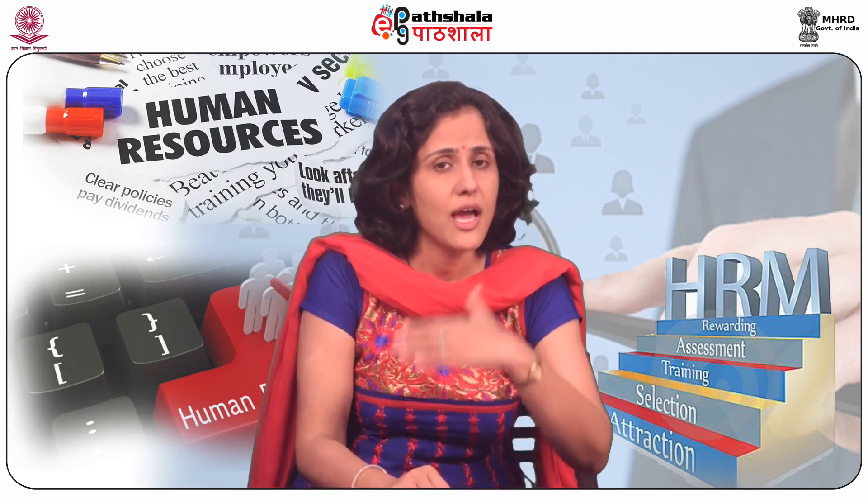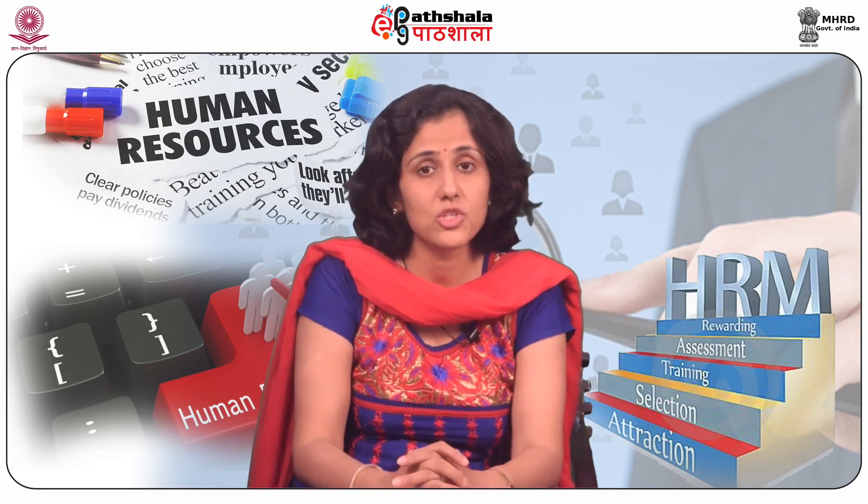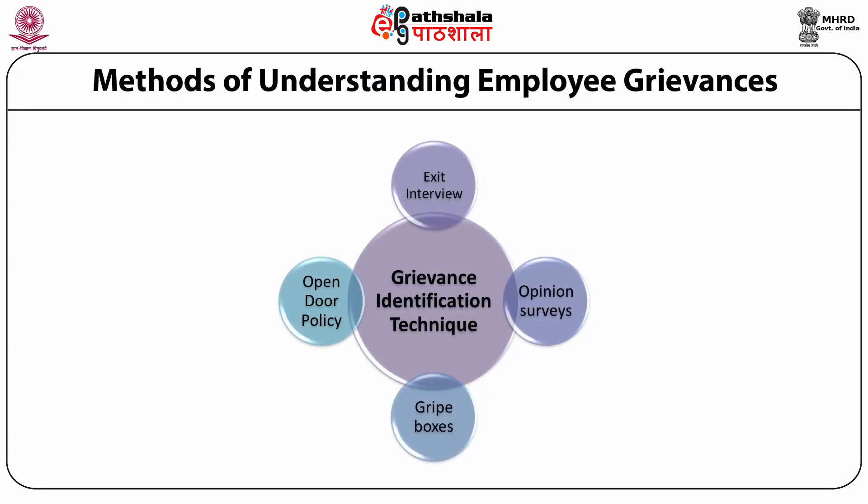In the observation method, grievances are not heard from the aggrieved employee directly. Instead, the manager or immediate supervisor constantly tracks the behavior of employees working under them. If an employee exhibits an indifferent attitude, has difficulty getting along with people, mishandles or damages tools or materials due to carelessness, or is frequently absent, the supervisor infers that the employee has serious grievances needing immediate action. In summary, the four main methods are exit interviews, opinion surveys, gripe boxes, and open door policy.